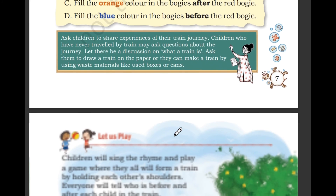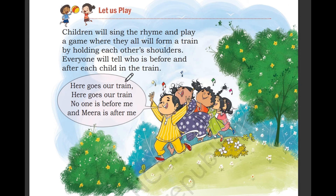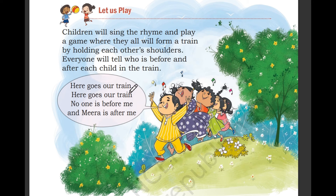So we have colored. Let us play. Children will sing the rhyme and form a train by holding each other's shoulders. Everyone will tell who is before and after each child in the train. No one is before me and Meera is after me.